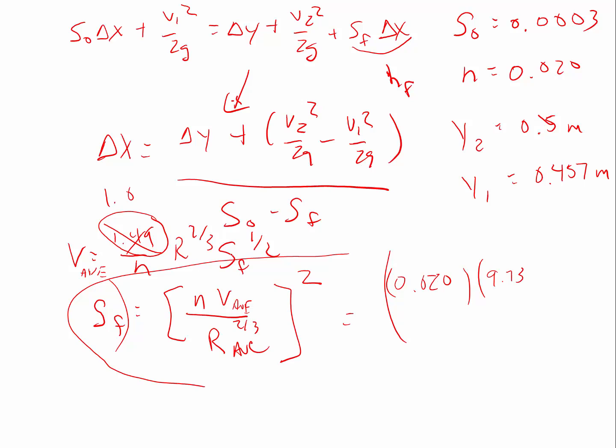And then I divide that by the average hydraulic radius, which is going to be 0.479, and that's going to be to the two-thirds power. And so then I square that. I come up with a friction slope of 0.101 meter per meter. And so, as you know, that's going to be that value there in the delta x equation.